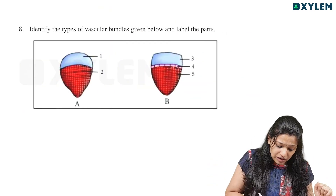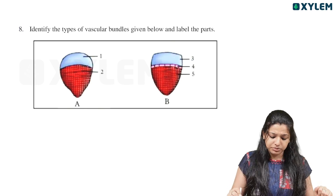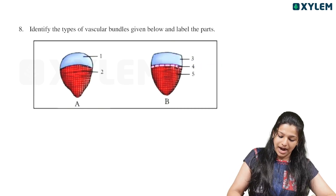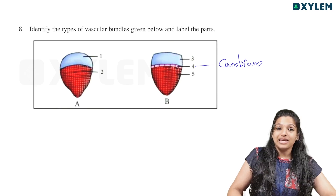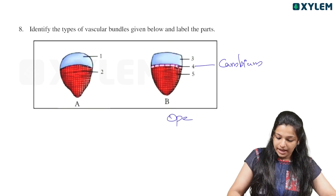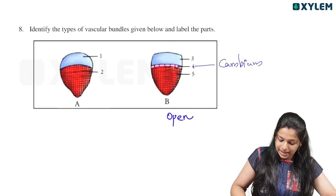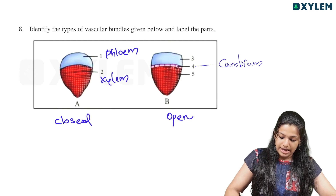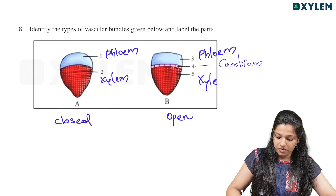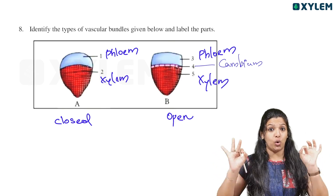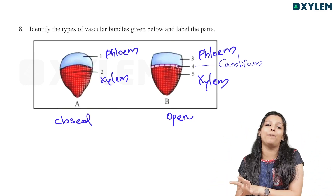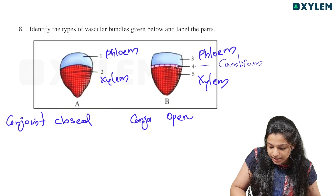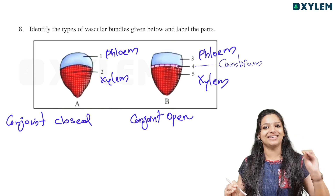Identify the types of vascular bundles given below and label the parts. We have to know what type of vascular bundles these are. This one has cambium — cambium makes it an open vascular bundle. This is a conjoint open vascular bundle. The other type is conjoint closed, where there is no cambium.